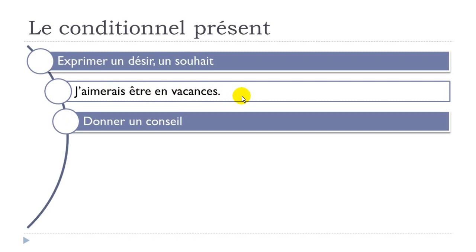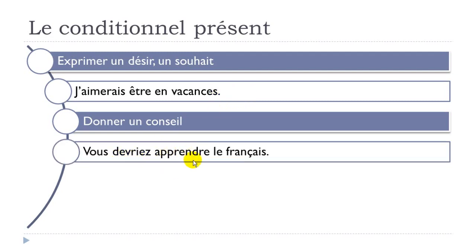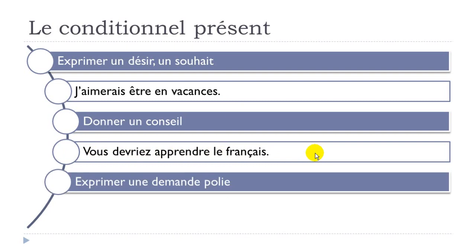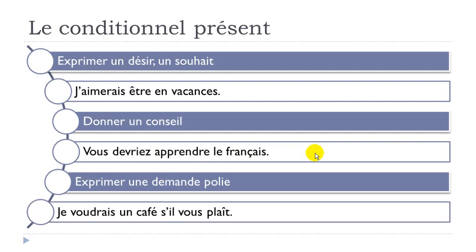The second use is to give advice — donner un conseil. For example: Vous devriez apprendre le français — you should learn French. And if you want to ask something politely, especially in a café, restaurant, or shop, definitely use the conditionnel form. For example: Je voudrais un café s'il vous plaît — I would like a coffee please. Trust me, it's quite important. So: J'aimerais être en vacances; Vous devriez apprendre le français; Je voudrais un café s'il vous plaît.